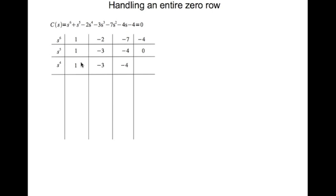We write down the entries — this entry is obtained by doing (1 × (-2) - 1 × (-3)) / 1; this entry is gotten by (1 × (-7) - (-4) × 1) / 1, and so on.